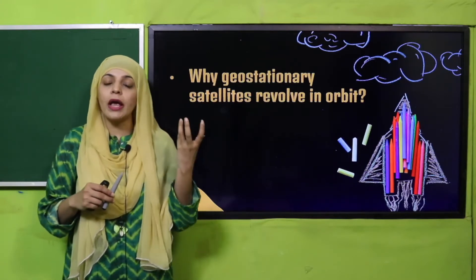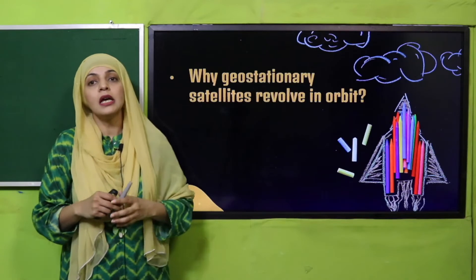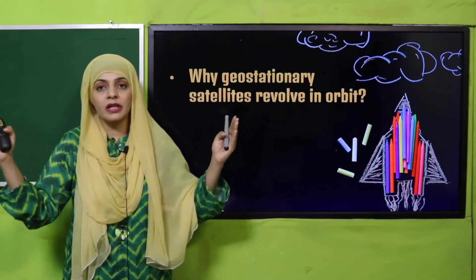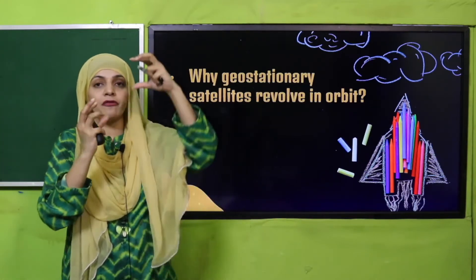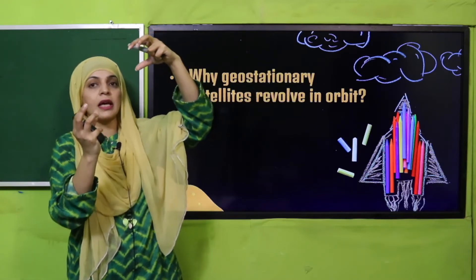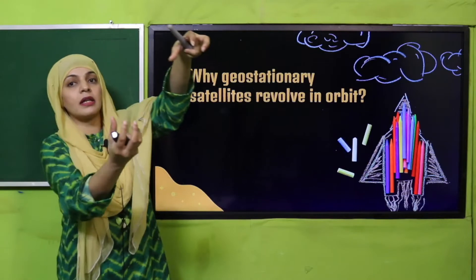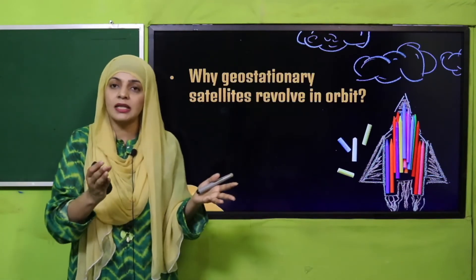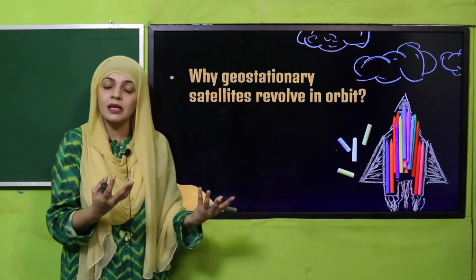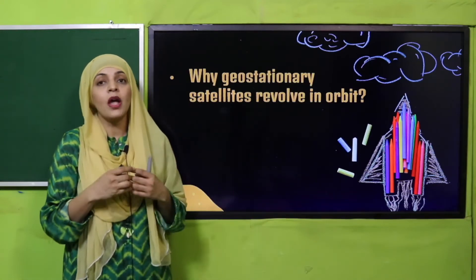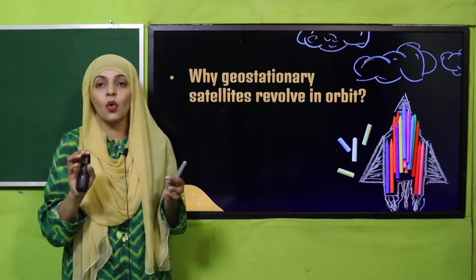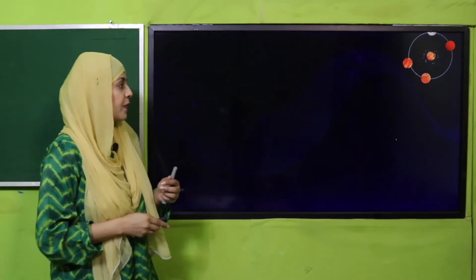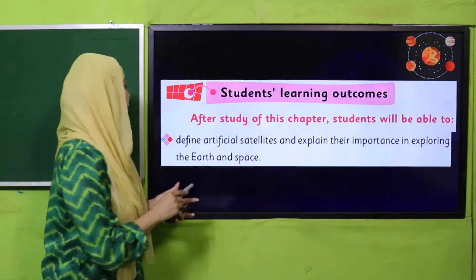My question is: why do geostationary satellites revolve in a fixed orbit? Because they cover a particular area, and that is why they revolve at the Earth's speed. When they are located at a fixed position, they orbit along with the Earth. They cover a fixed area, so from that area you can know the weather, take pictures, use GPS, communication, and also perform surveillance.